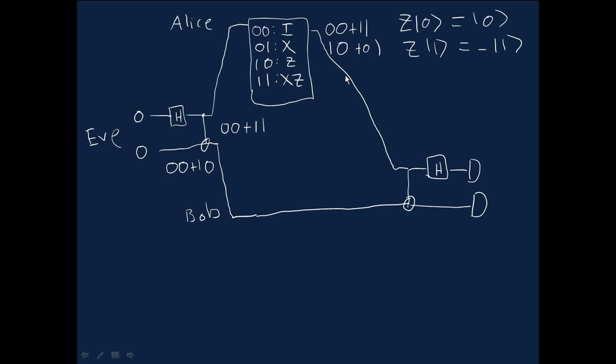If she applies the Z gate, well, the 0 isn't changed, but we pick up a minus because of the 1. And if we do the Z gate followed by the X gate, well, it's like doing this, which is just the Z gate, followed by flipping the first bit, so we end up with 1, 0, minus 1, 1.